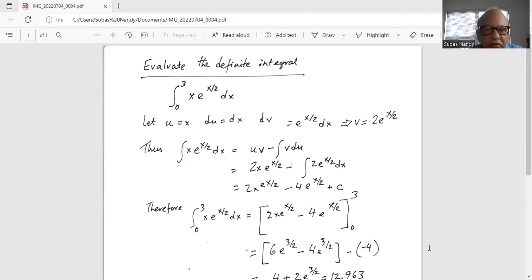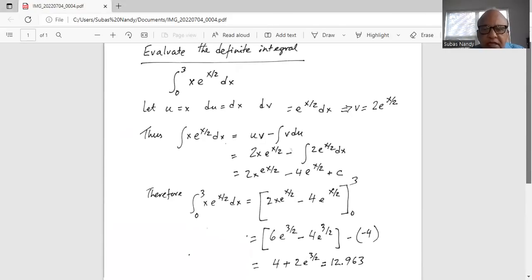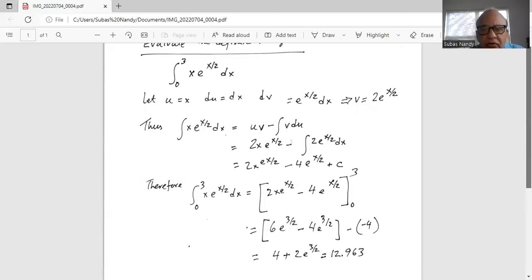The limits are from 0 to 3, so it is from limits of 0 to 3, and it is 6. 2 times 3 is 6, e raised to the power of 3 by 2 minus 4e raised to the power of 3 by 2 minus 2 times 0 is 0.